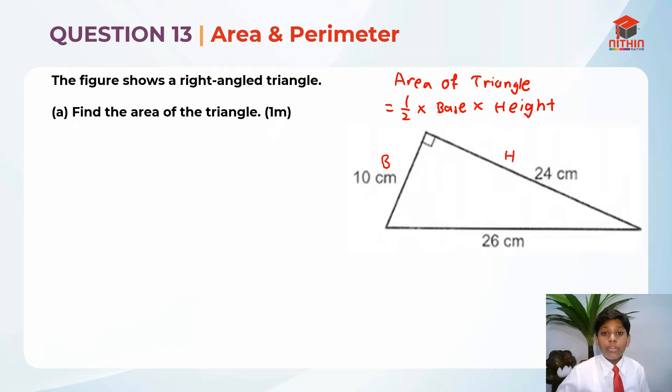So the base is 10 and the height is 24. When the base and the height meet, it should make 90 degrees. Then only it is considered as a base and the height. So the formula is area equals to half times base times height.